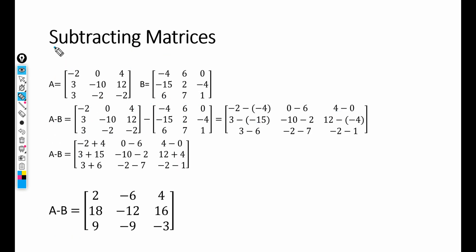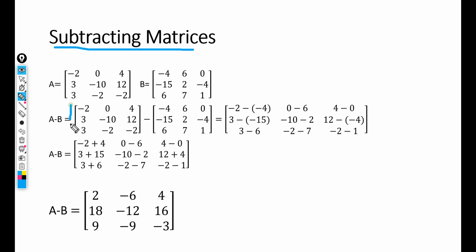Now we are going to discuss subtracting matrices — how to subtract one matrix from another. We have matrix A and matrix B, and they both have the same dimensions. When they have the same dimensions, they are conformable for subtraction and addition. So we can compute A minus B: we write matrix A minus matrix B.